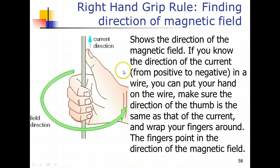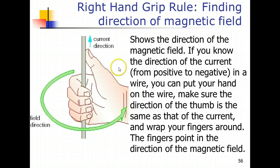Sometimes a diagram will show a conductor that is horizontal with the current flowing from left to right, and you will have to adjust the application of your right-hand grip rule accordingly. They can also give you the direction of magnetic field lines and ask you to determine the direction of electrical current. In the worksheets I have given you, there are some examples of that.